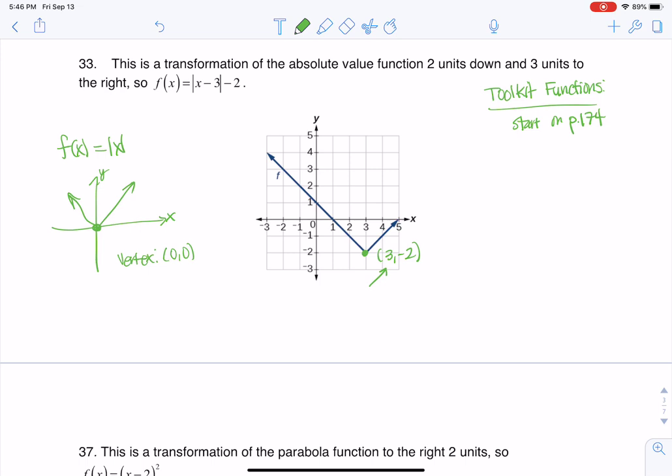So if we look at the X coordinate, instead of it being 0 like it was on your toolkit function, it's been shifted right 3 units.